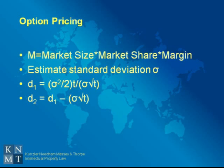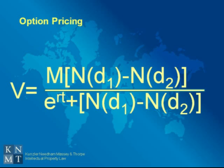Using the standard deviation, you then calculate a couple of values, D1 and D2. And using those, along with the market valuation, you apply a variation of the Black-Scholes pricing formula to calculate a patent value.